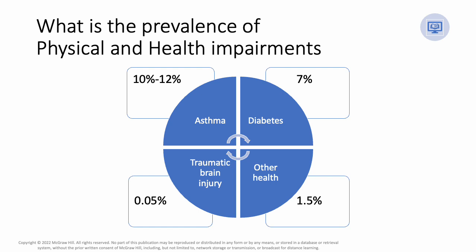Other health impairments, OHI, is now the fourth largest category of disability under IDEA. The prevalence rates of students who suffer from OHI, orthopedic impairment, or traumatic brain injury medical conditions are relatively high. Ten to twelve percent of the population will develop asthma by the age of 18. Approximately 7 percent of the population has diabetes, about 0.05 percent had a traumatic brain injury.